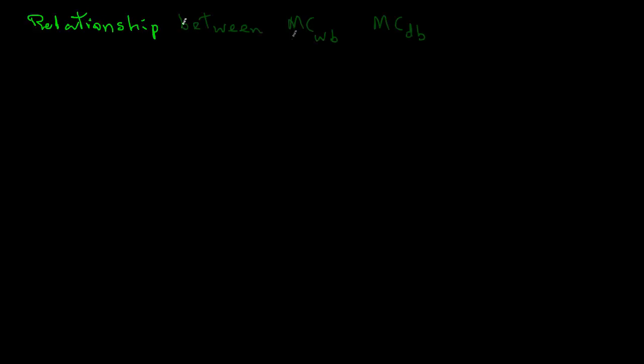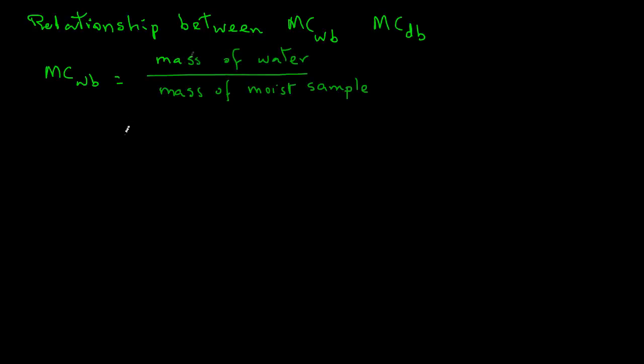Let's look at the relationship between moisture content wet basis and moisture content dry basis. Moisture content wet basis equals mass of water divided by mass of moist sample. We can leave the numerator as it is — mass of water.